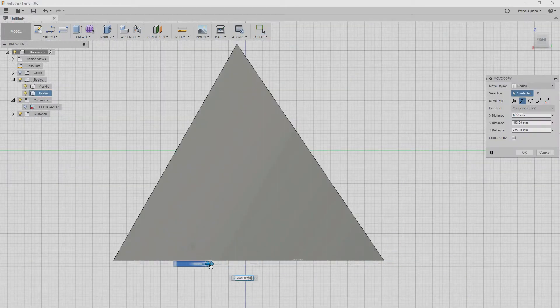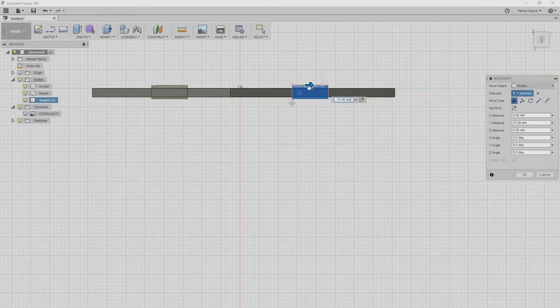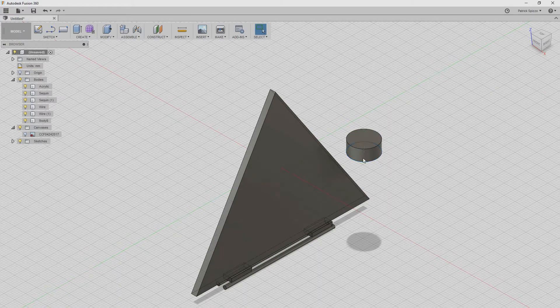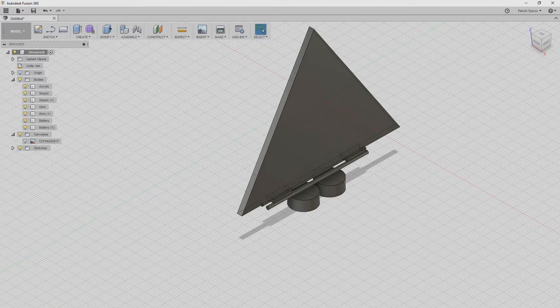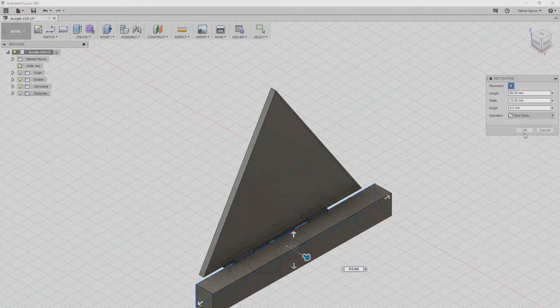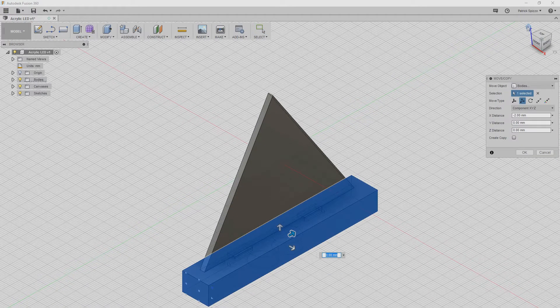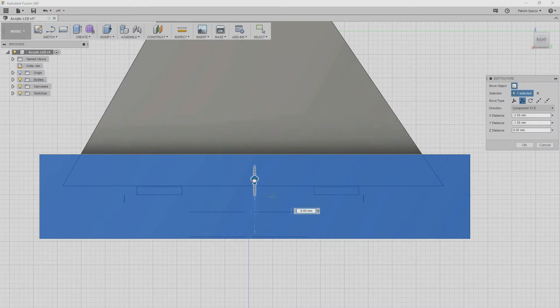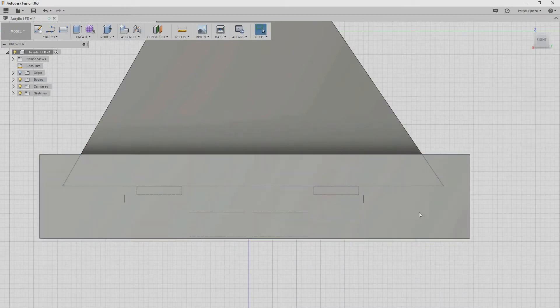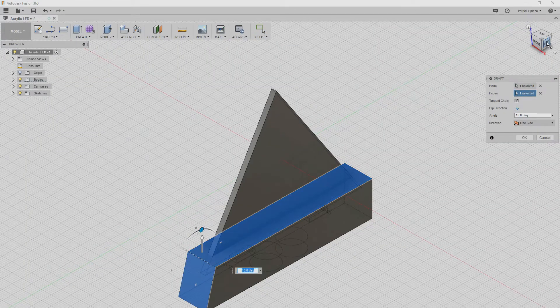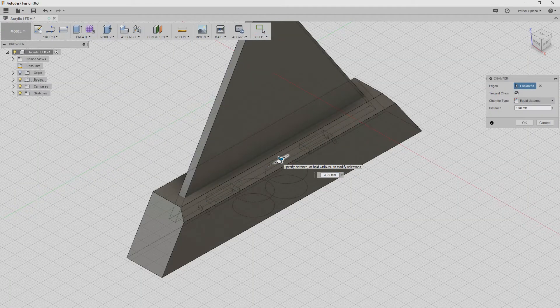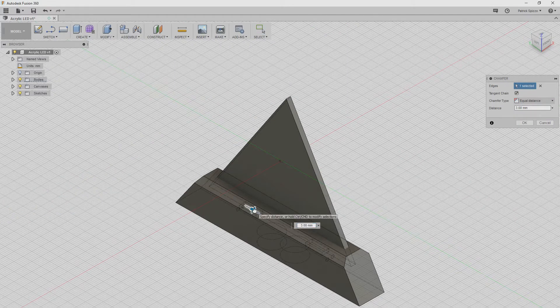I quickly added in the other internal components using primitives. I used boxes for the sequins and cylinders for the wires and batteries. After laying out the internal components for reference later, I created a box as the basic shape of the base. I made sure that the box enclosed all of the internal pieces, and then I used draft to slope the edges to the same angle as the acrylic. Finally, I chamfered the top edges to make it look a little nicer.